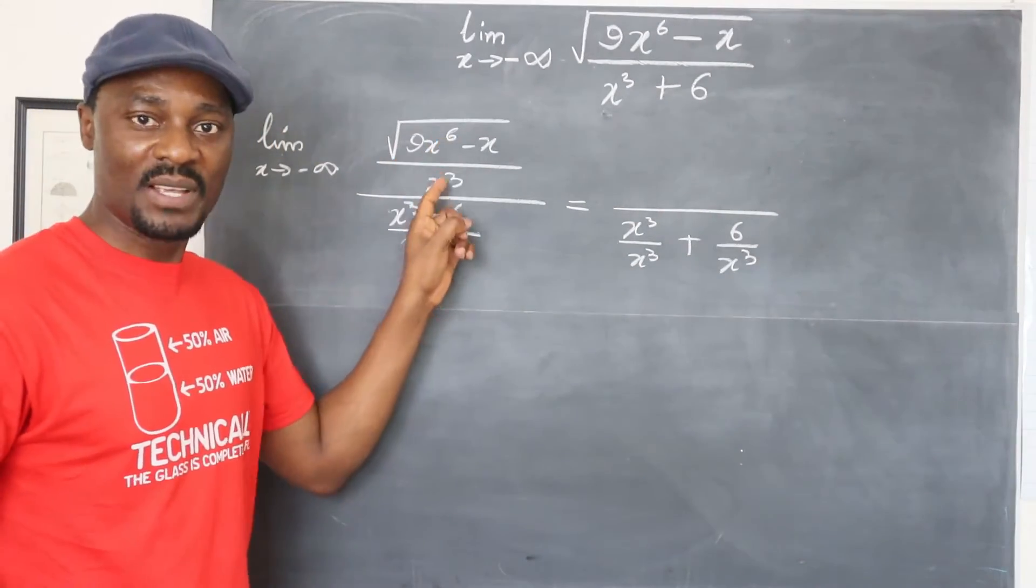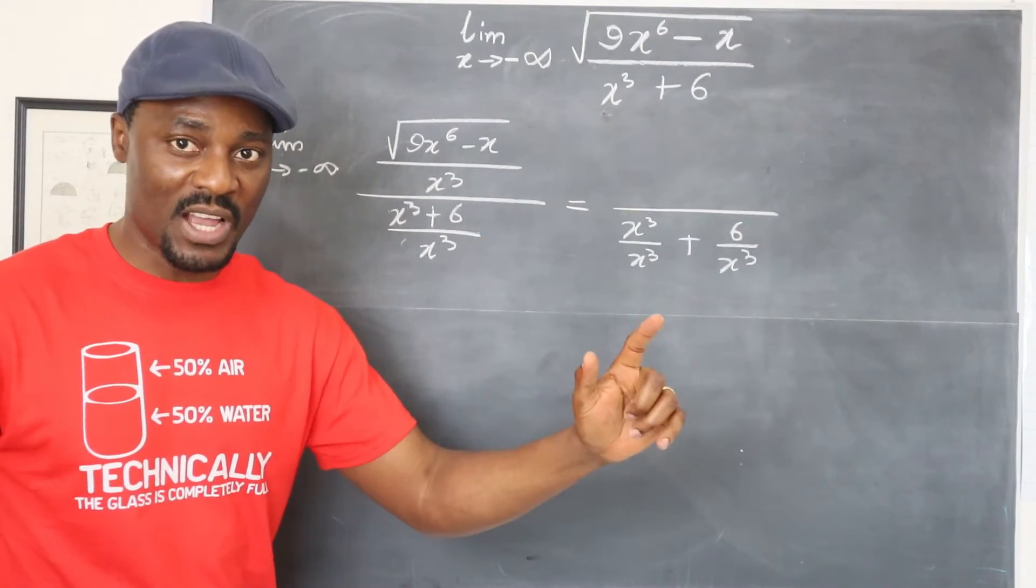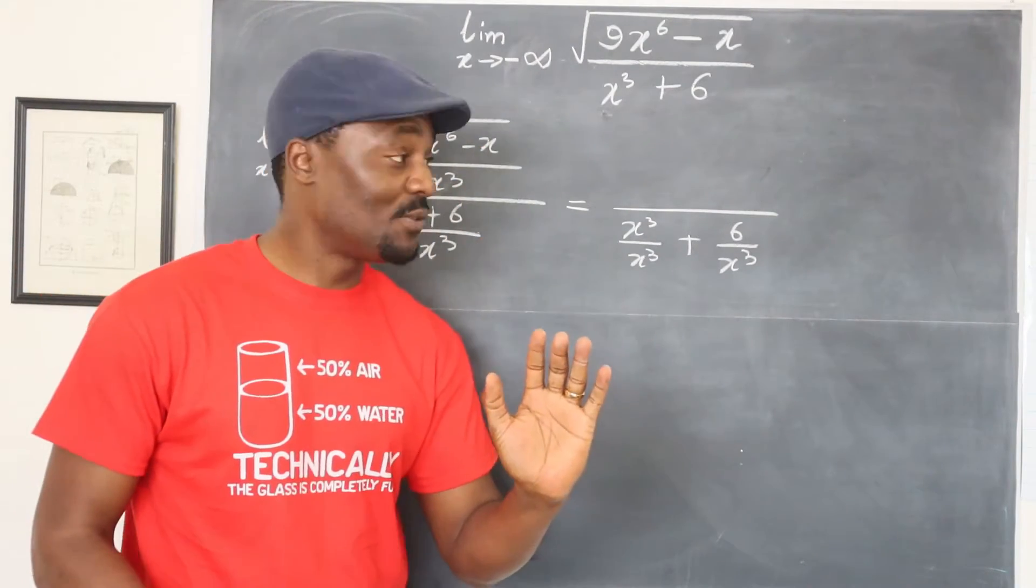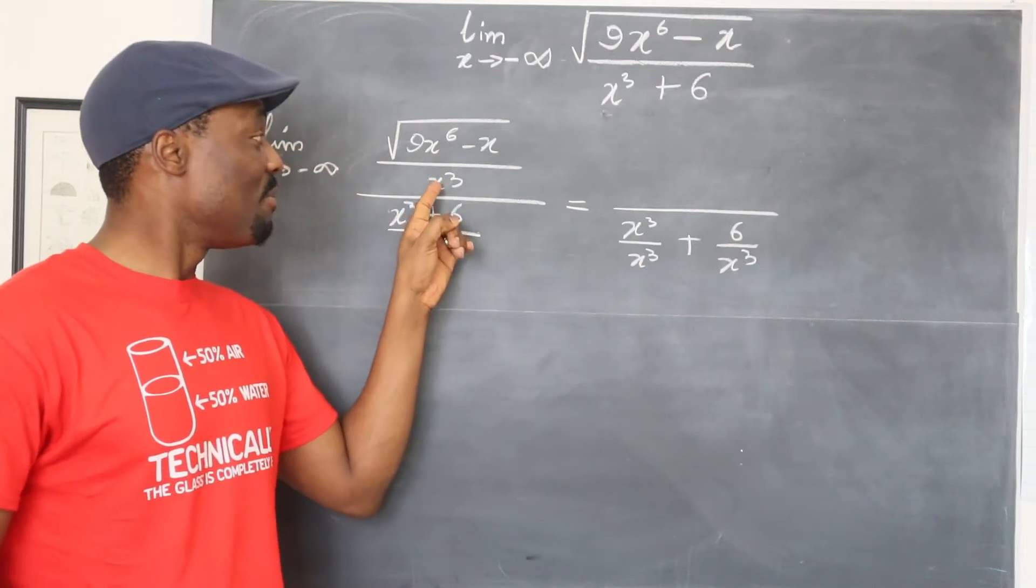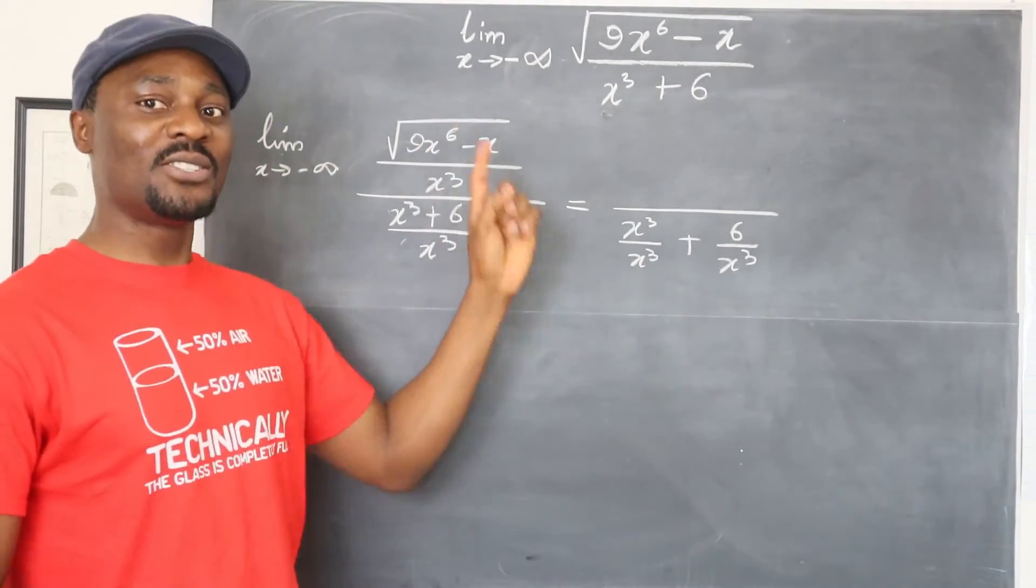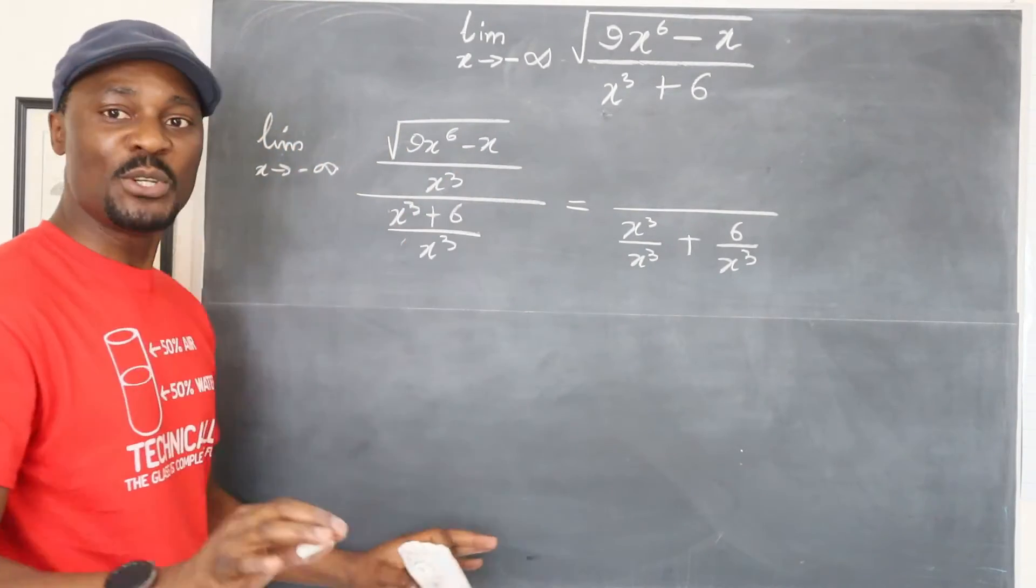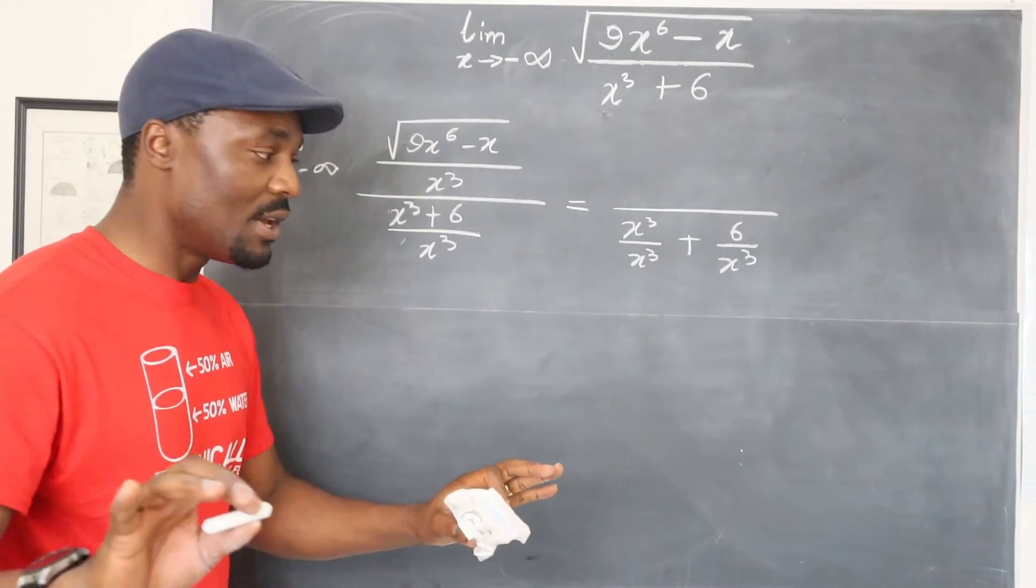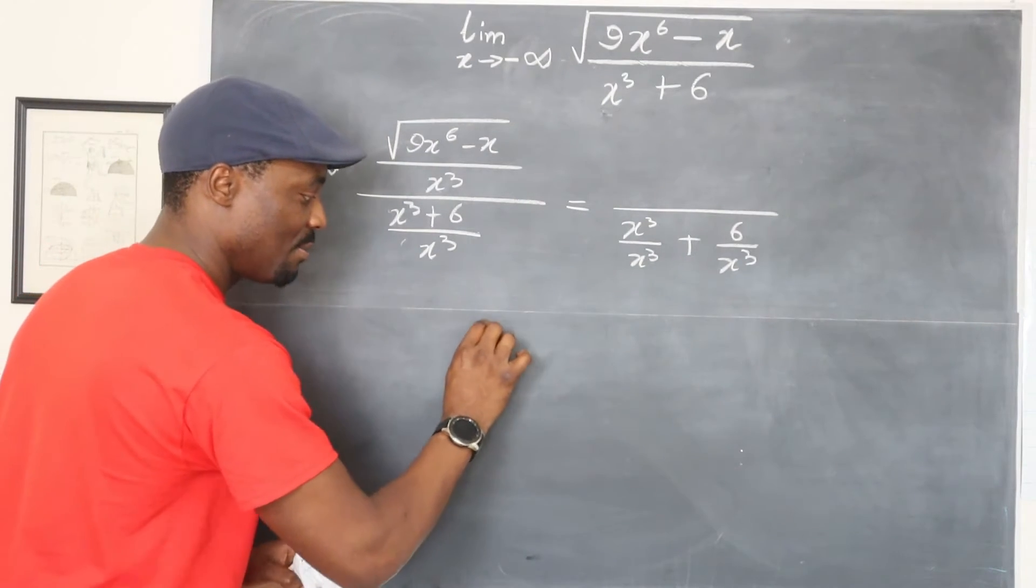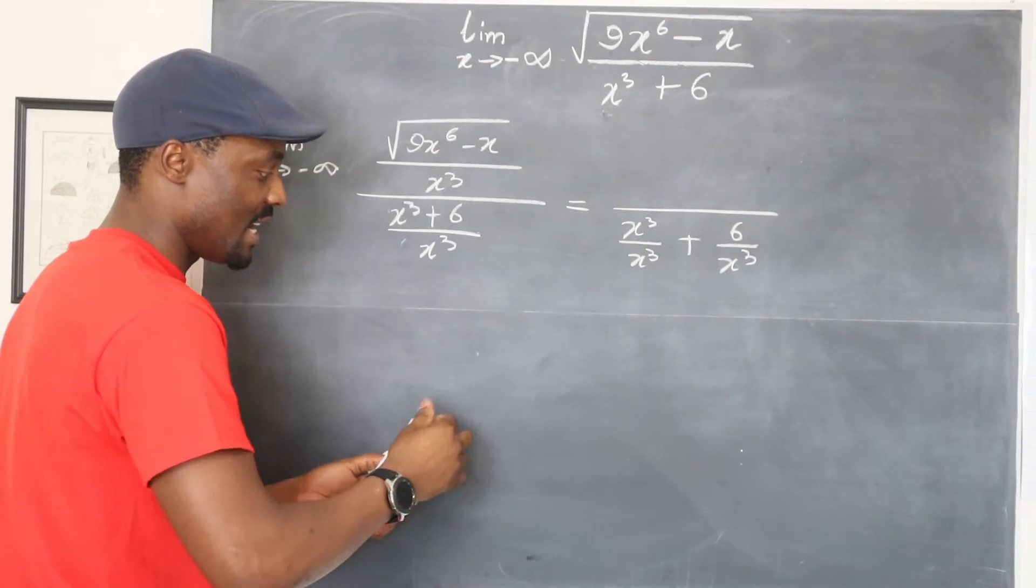But you cannot break this up like this because these two are bound together by the square root sign. So for you to break these two up, you have to sneak this x cubed under the square root sign. And that makes it possible for you to do. And how do you do that? Let me show you what you have to look at. Look at this expression. Square root of nine, so we can get an answer.